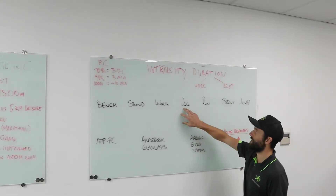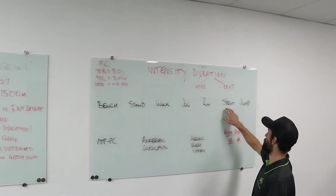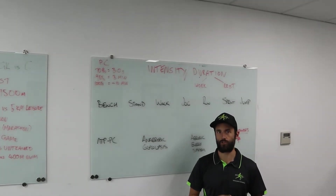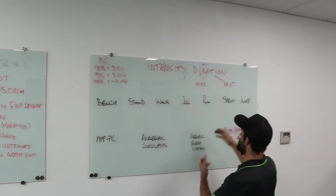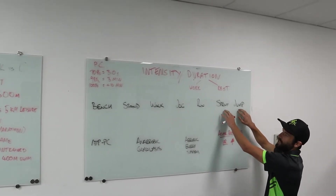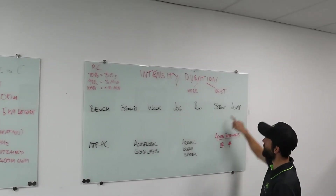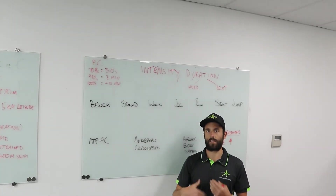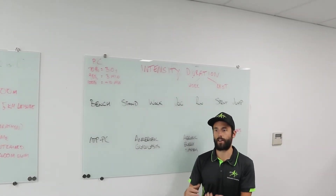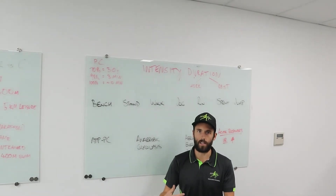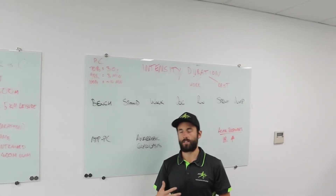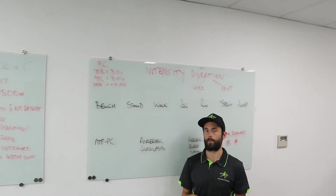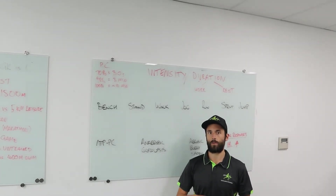When we increase intensity to a jog, a run, a sprint, or a jump, that's when we start to see changes in anaerobic contributions. For very high intensity activities, the ATP-PC system is the most explosive energy system — it allows us to sprint fastest, jump highest. Ideally in a team sport when we sprint, we want to see ATP-PC increasing its contribution to allow that explosive movement.